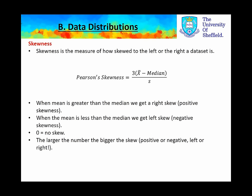We learned that skewness is the measure of how skewed to the left or the right a data set is, and that we use Pearson's skewness to denote this, which is the mean minus the median, times by 3, all divided by the standard deviation. When the mean is greater than the median, we get a right skew, which is positive skewness, denoted by a positive number. When the mean is less than the median, we get a left skew, which is negative skewness, denoted by a negative number. Zero equals no skew; the larger the number, the bigger the skew.